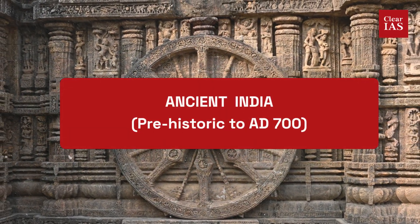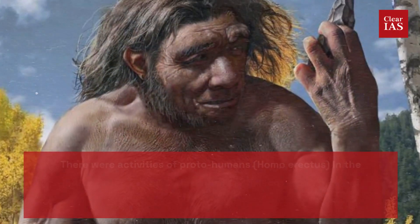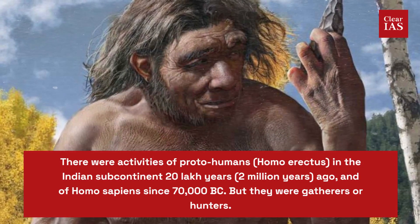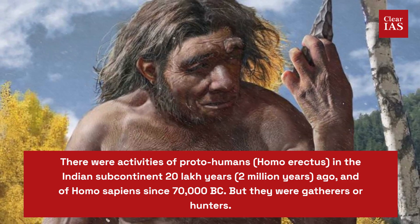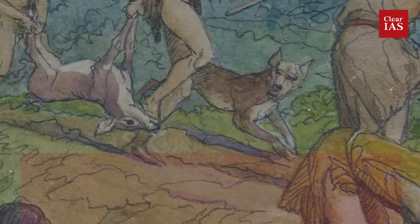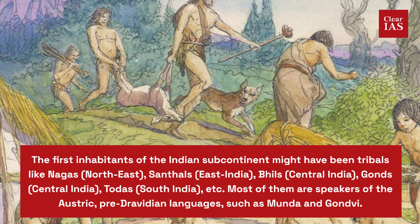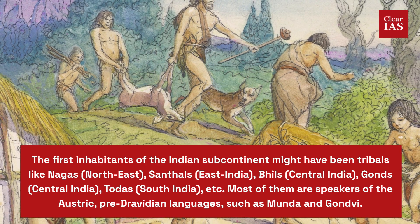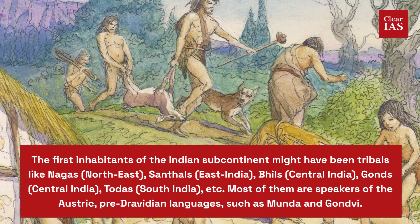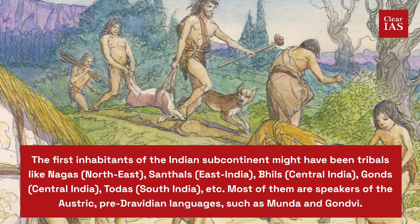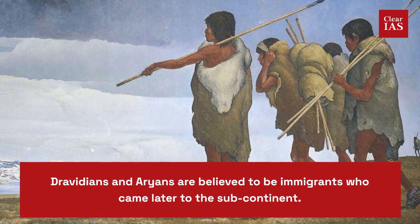First, let us look at the topic of ancient India, starting from prehistoric time to AD 700. There were activities of proto-humans in the Indian subcontinent 20 lakh years ago and of homo sapiens since 70,000 BC, but they were gatherers or hunters. The first inhabitants of the Indian subcontinent might have been tribals like the Nagas of North East, Santals of East India, Bhils and Gonts of Central India, and Todas of South India. Most of them are speakers of Austric pre-Dravidian languages such as Munda and Gondi. Dravidians and Aryans are believed to be immigrants who came later to the subcontinent.